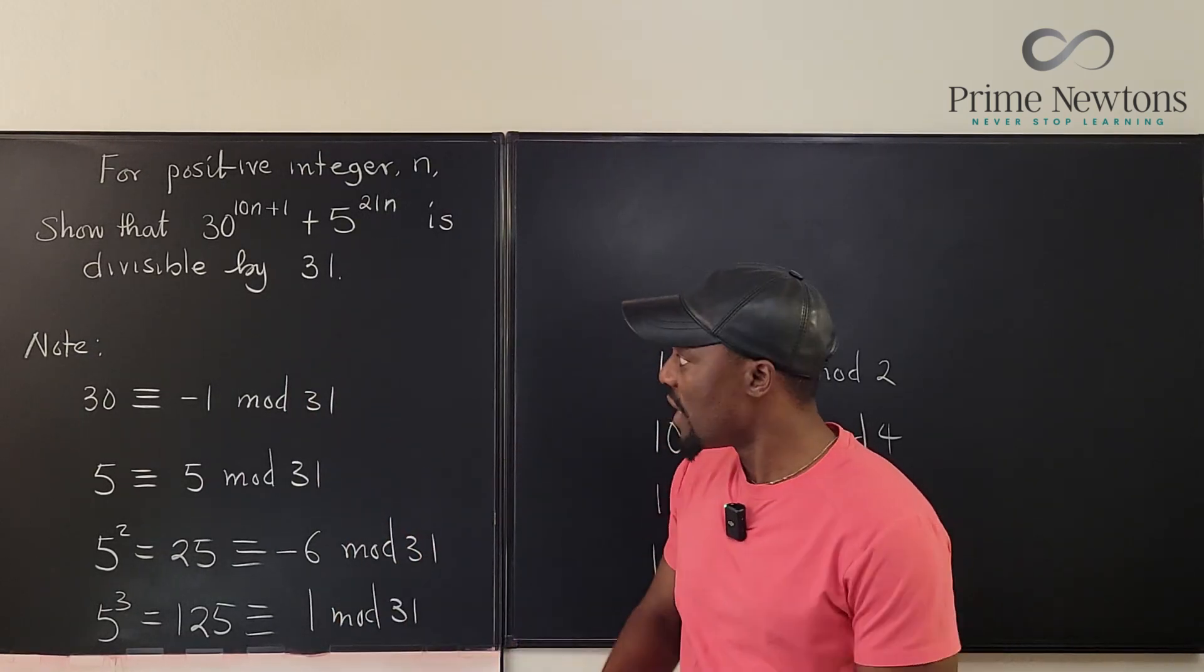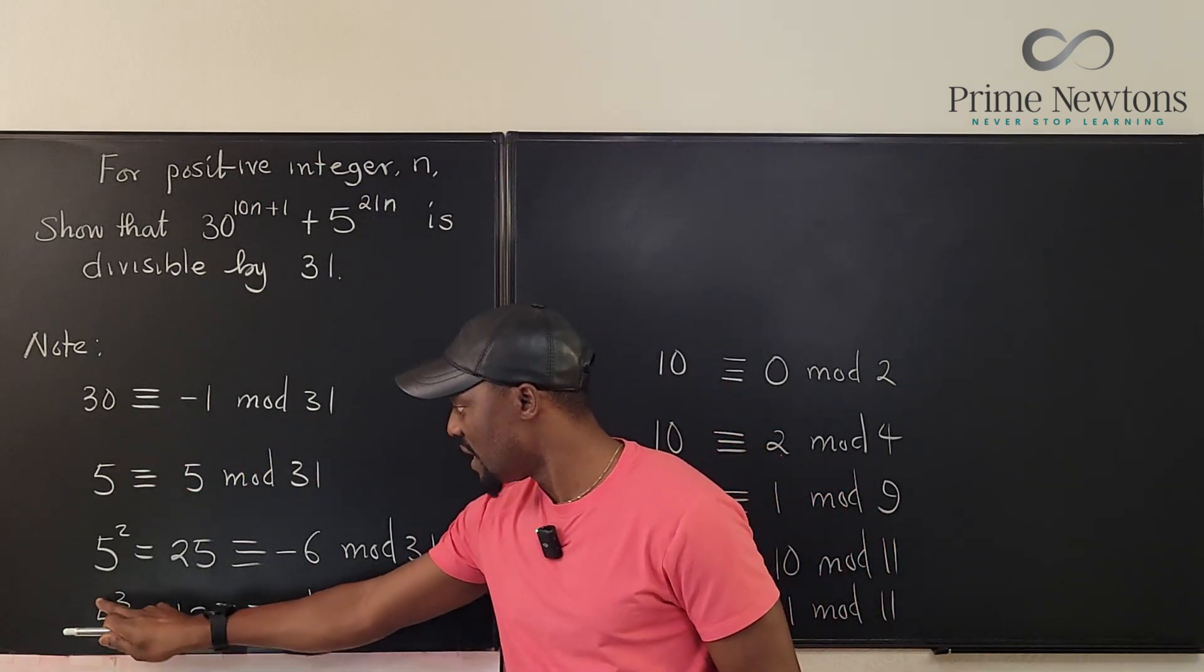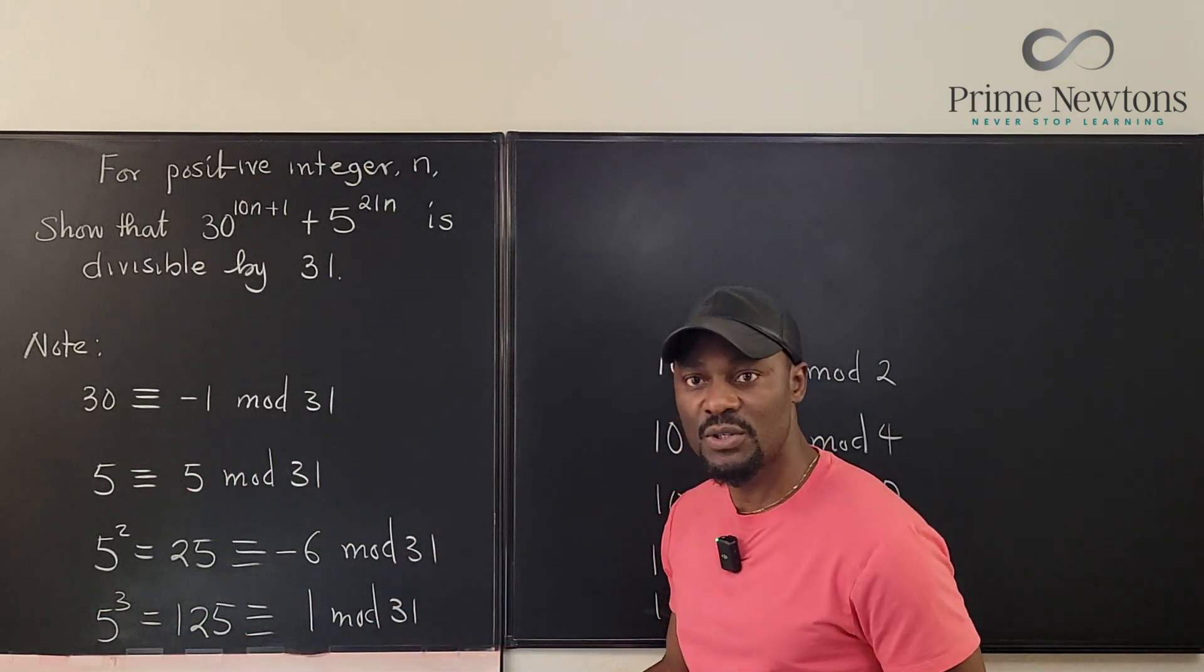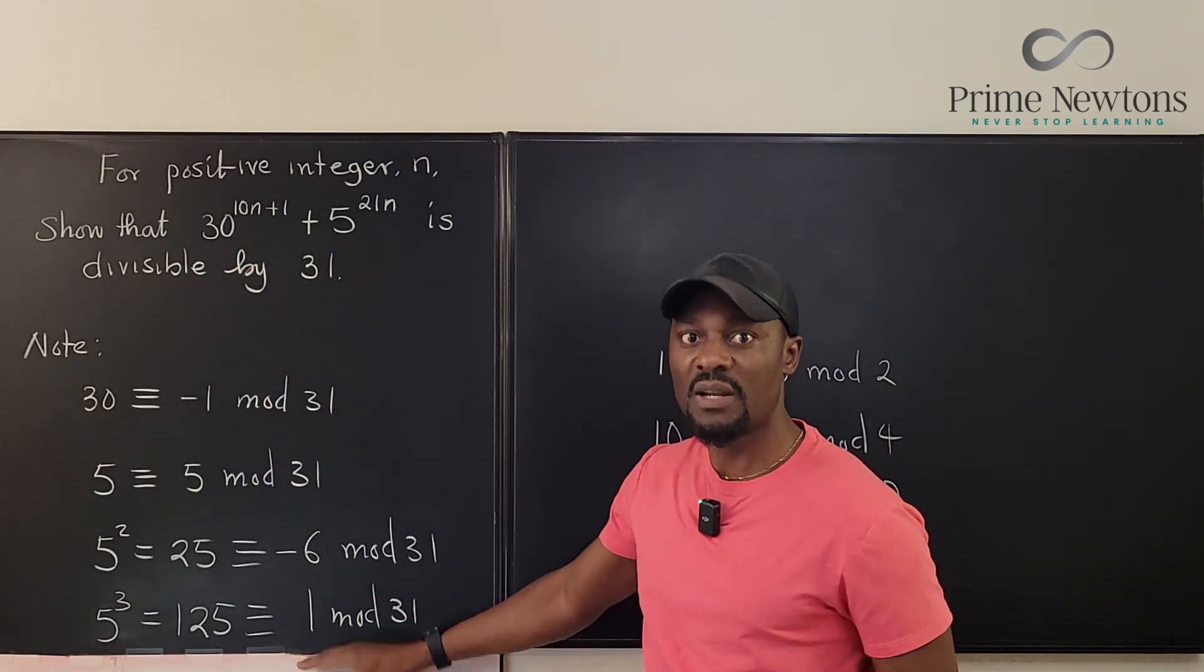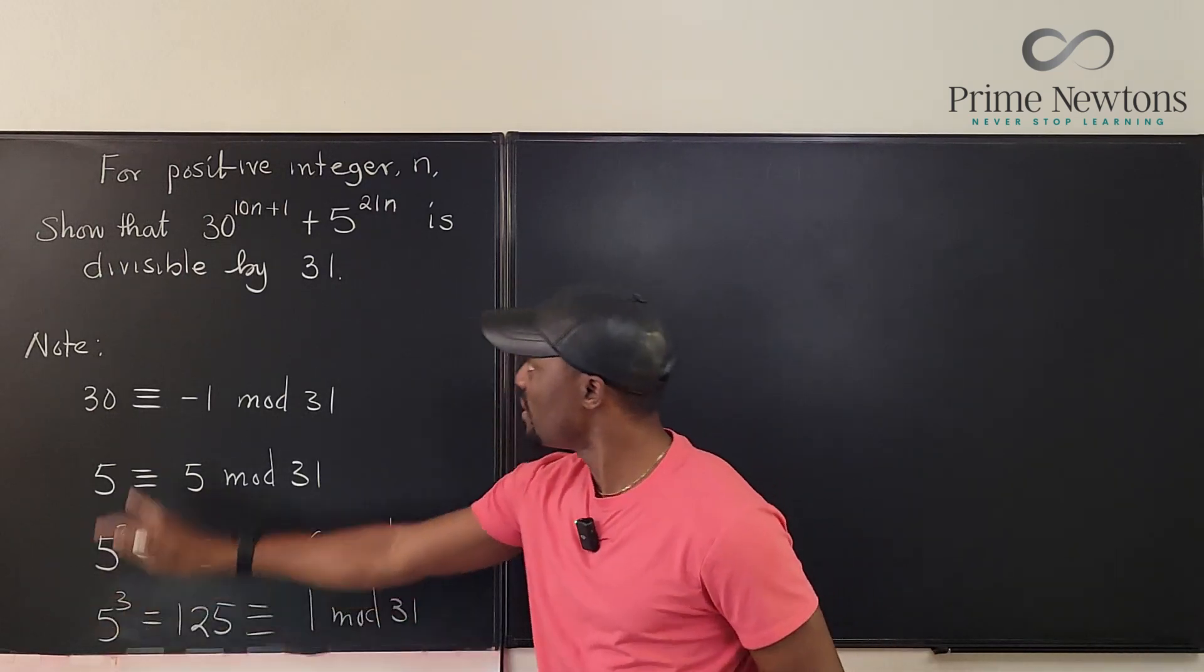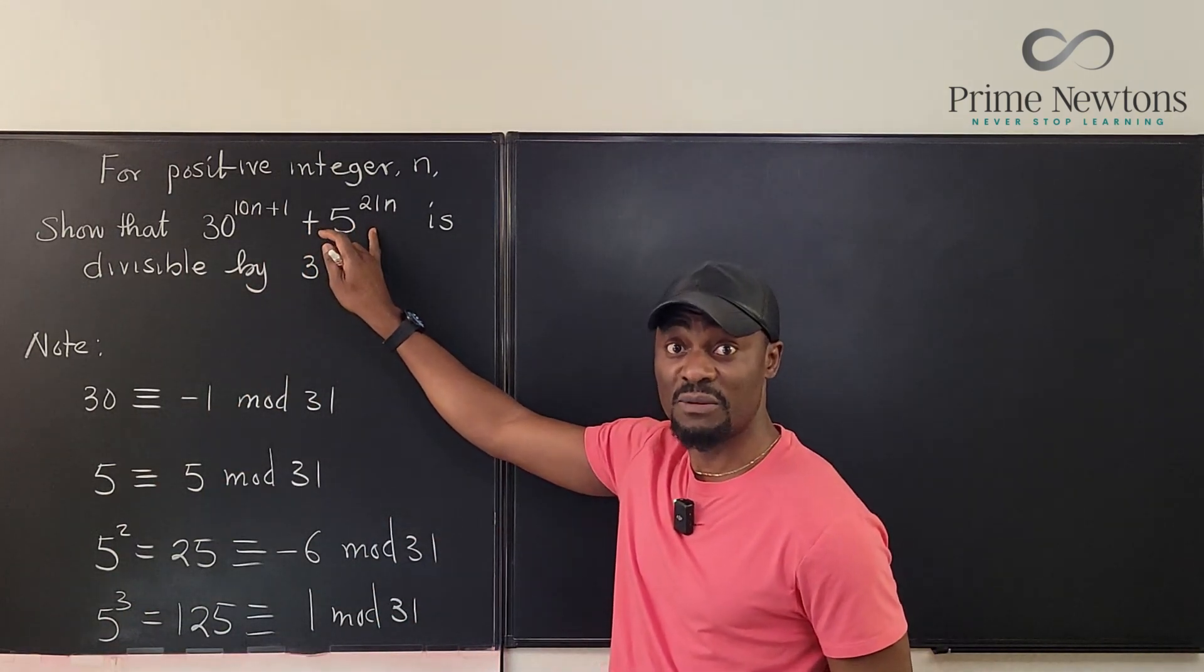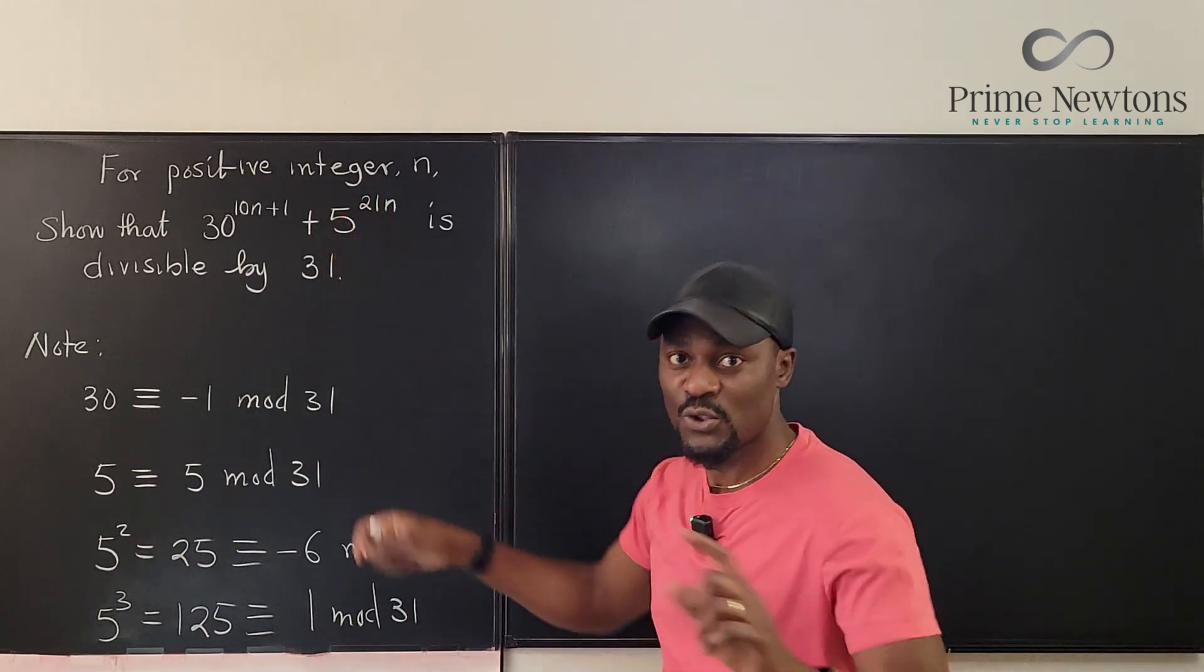So now we have found that 30 is negative 1 mod 31 and that 5 cubed is 1 mod 31. So we're going to go back here and rewrite this mod 31 and our answer is going to show up. So I just thought about it that it's better for me to rewrite this expression because this one needs some work. We have to separate 5 cubed from 5^(21n). So watch this.